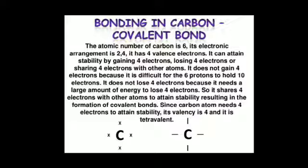If carbon gains 4 electrons, forming C4- negative anion, it would be difficult for the nucleus with 6 protons to hold on to 10 electrons—that is, 4 extra electrons. In the second case, if carbon loses 4 electrons, forming C4+ positive cation, it would require a large amount of energy to remove 4 electrons.